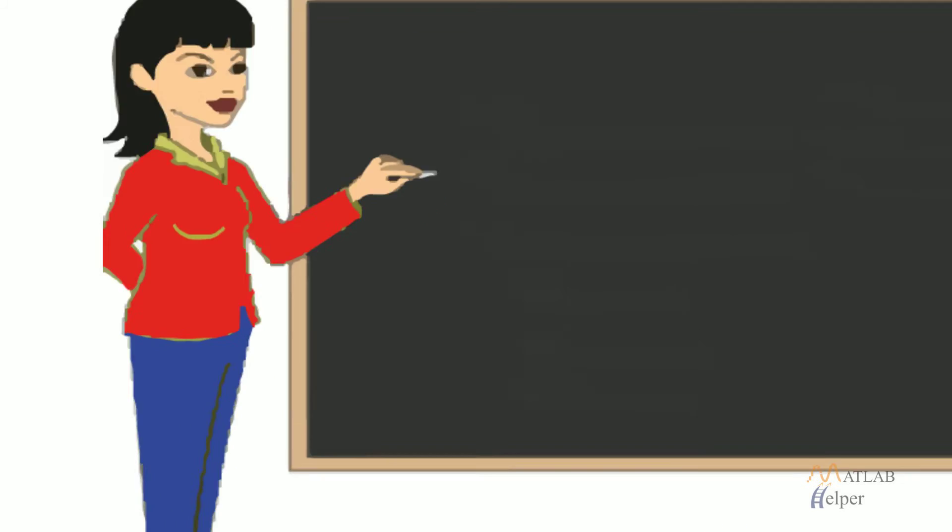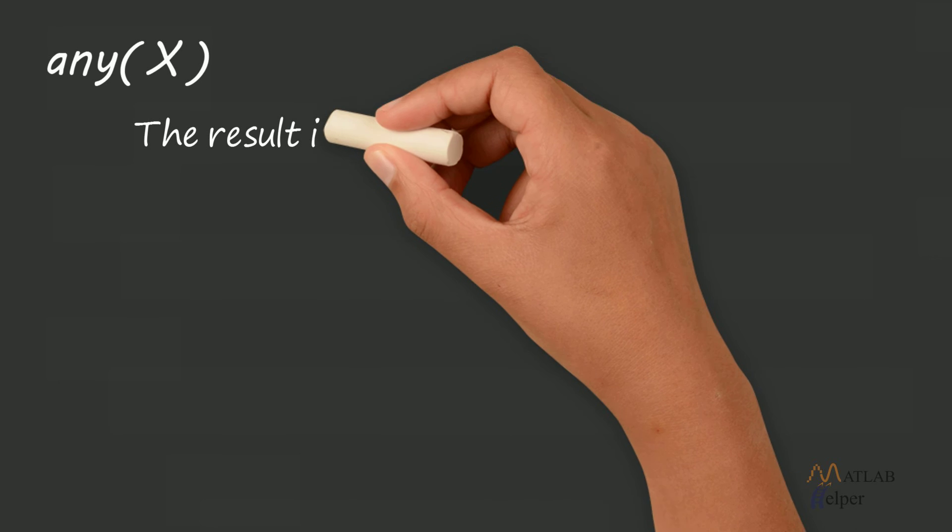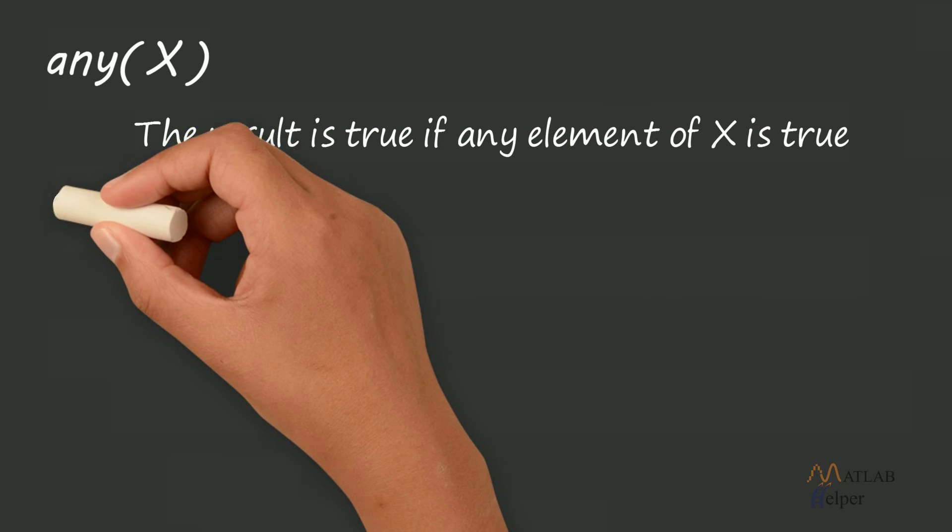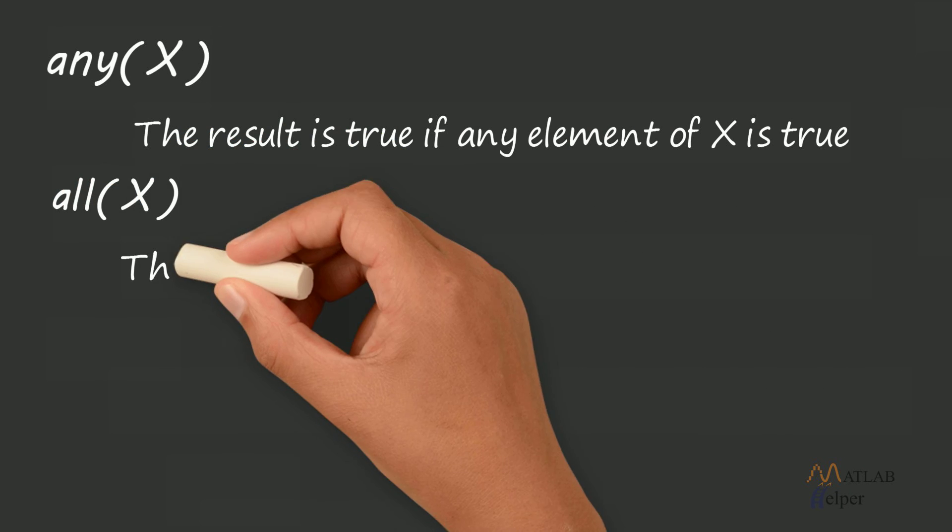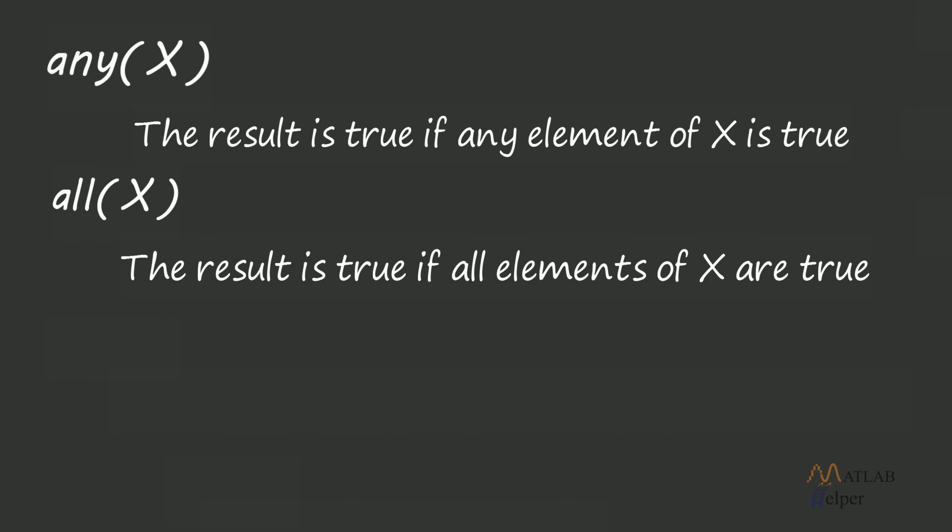First one, any X: The result is true if any element of X is true. All X: The result is true if all the elements of X are true.